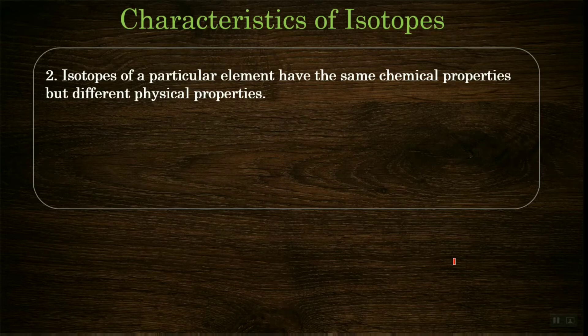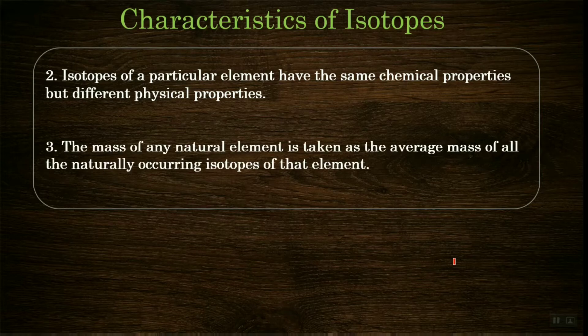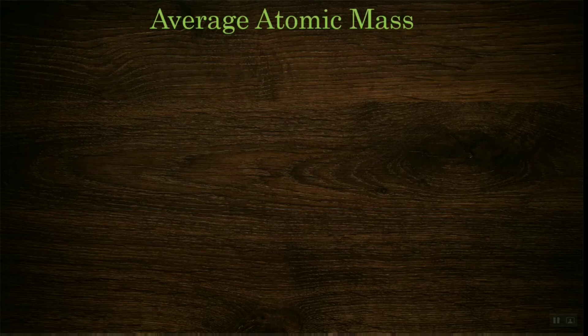The second characteristic: isotopes of a particular element have the same chemical properties but different physical properties. Chemical properties depend on the number of electrons. Since all isotopes of an element have the same number of electrons, their chemical properties are the same, but their physical properties differ. Third characteristic: the mass of any natural element is taken as the average mass of all its naturally occurring isotopes.